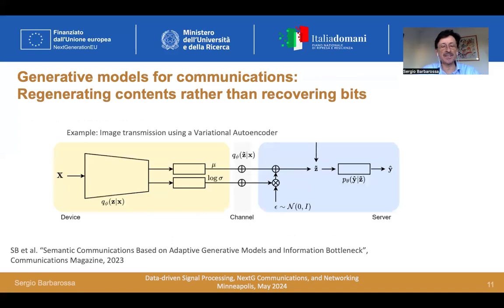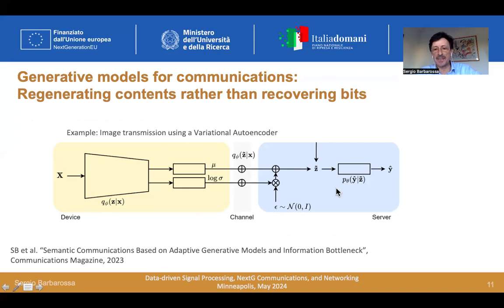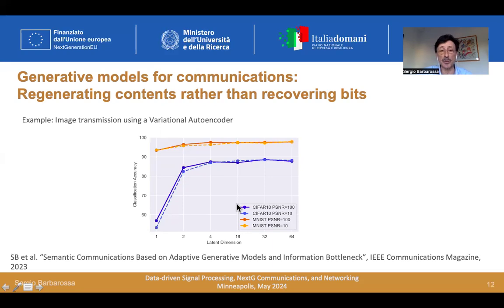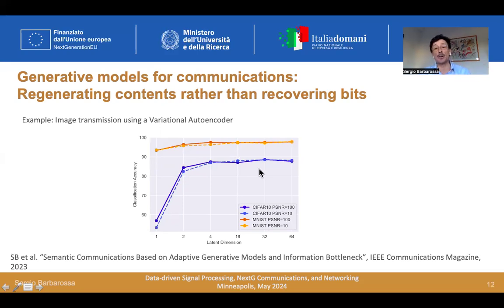A simple example of this idea is to use a variational autoencoder. The first part is used at the transmitter side: we encode an image into a certain number of parameters, transmit these parameters, and generate an image at the receiver side. In terms of the goal of communication — classification — we plot classification accuracy versus the dimension of the latent vector. Transmitting either handwritten digits from the MNIST dataset or images from the CIFAR-10 dataset, we can achieve fairly good classification accuracy even with a very low number of bits.